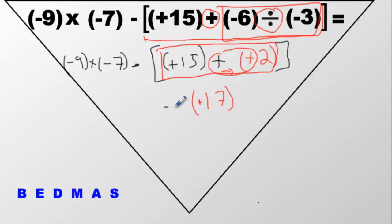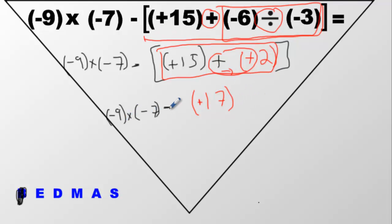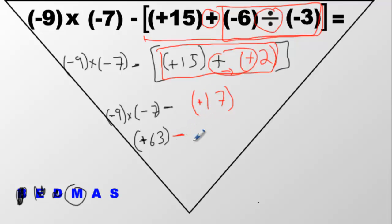Drop down the minus sign, the negative 7, and the negative 9 multiplied. All that work was just bracket work. Now we have multiplication and subtraction — no exponents, no more division. Multiplication comes first: negative times negative is positive — positive about that? Positive! 9 times 7 is 63. The minus sign drops down and positive 17 comes down. We have subtraction left — we're done everything else.